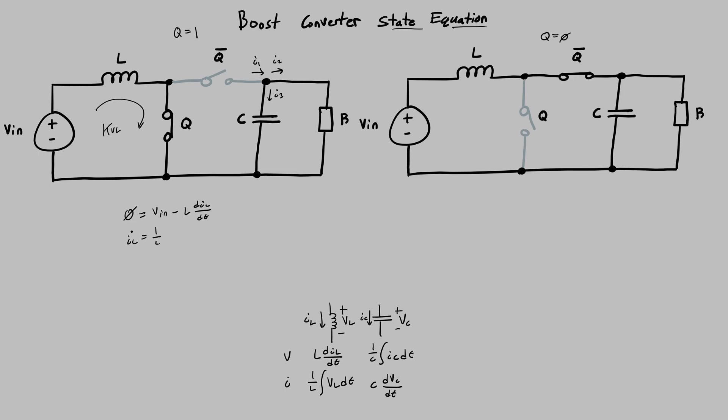And you end up with a really simple state equation: it's just 1 over L of V_in. So that's the first one — pretty simple.